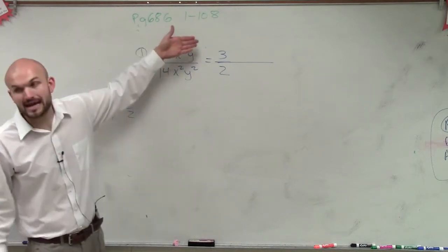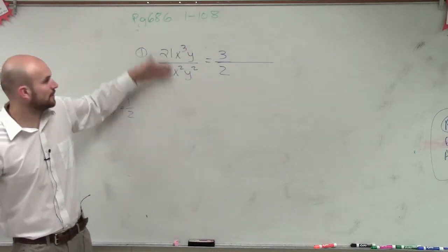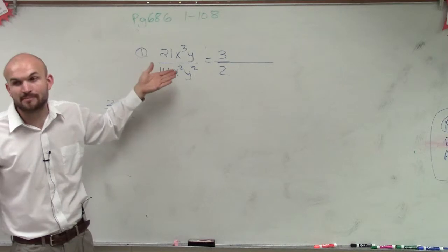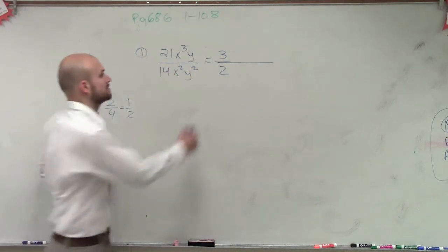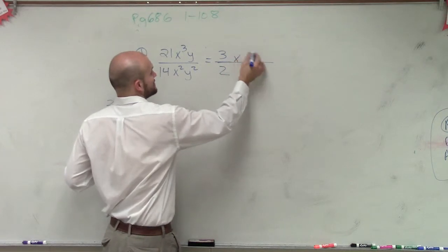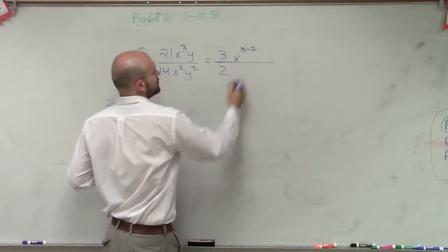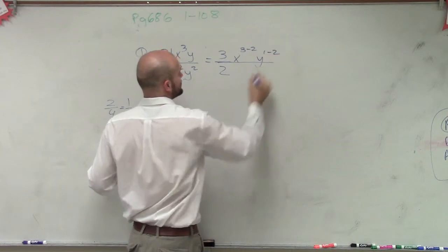So therefore, now I need to use the properties of exponents. Remember, when you have an exponent in the numerator and exponent in the denominator, you subtract the powers. So this becomes x cubed minus 2, and then this one is y to the first minus 2.